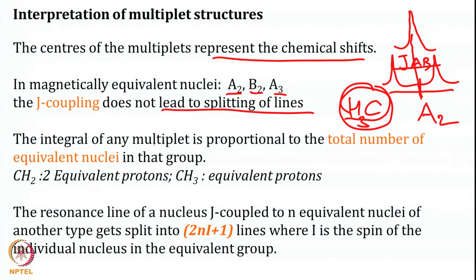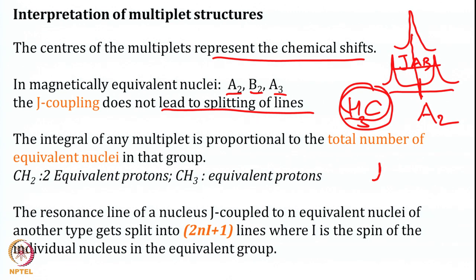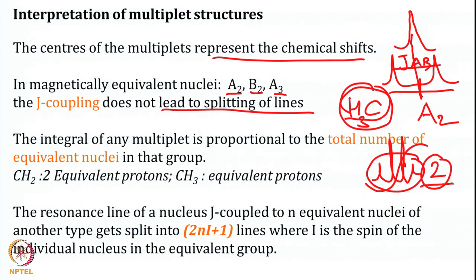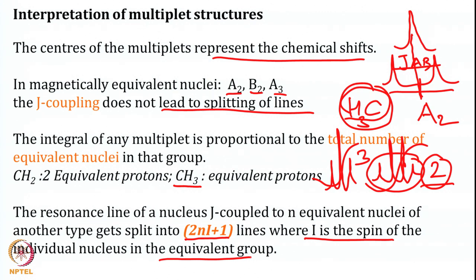The integral of any multiplet is proportional to the total number of equivalent protons in that group. Even if the CH2 signal is split into multiple lines, when you integrate, the ratio corresponds to two protons. Similarly, CH3 in alcohol corresponds to three protons. The resonance line of a nucleus J coupled to N equivalent nuclei of another type is split into 2Ni + 1 lines, where i is the spin of the individual nucleus in the equivalent group.